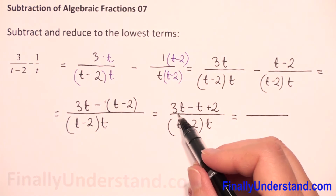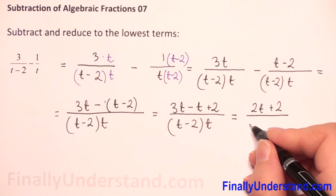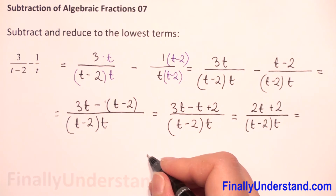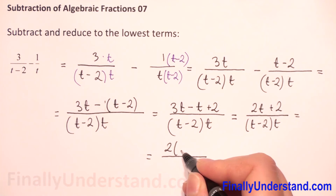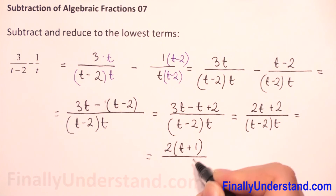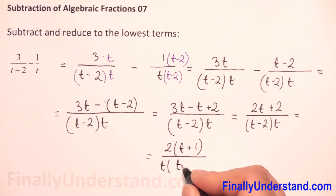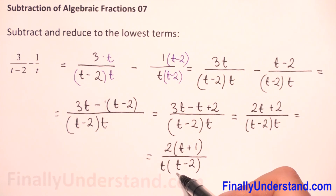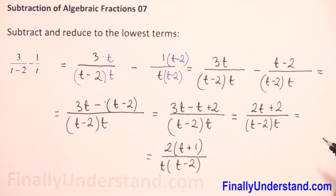We can combine the like terms. So 3t minus t is 2t, plus 2, over t minus 2 times t. We can also factorize 2 from the numerator, so it will be 2 times t plus 1, with t times t minus 2 in the denominator. We have multiplications in both numerator and denominator, but we don't have the same terms in the parentheses, so we cannot cancel anything. This is the final solution.